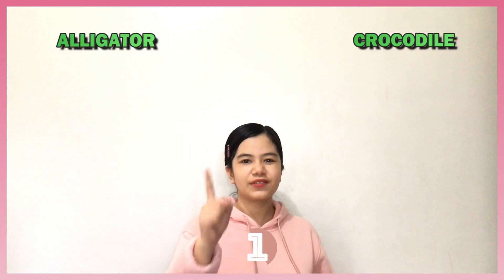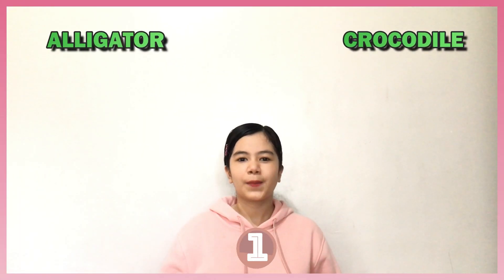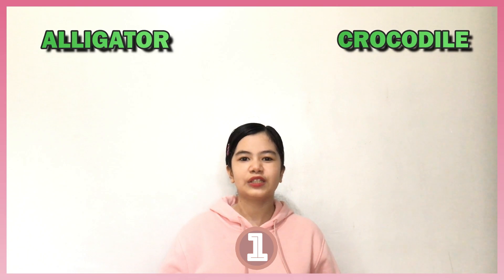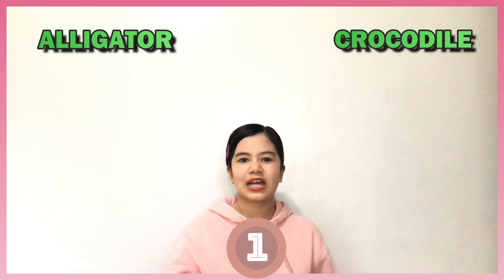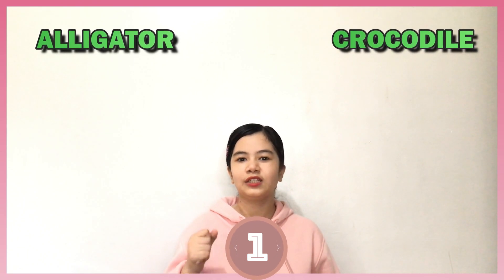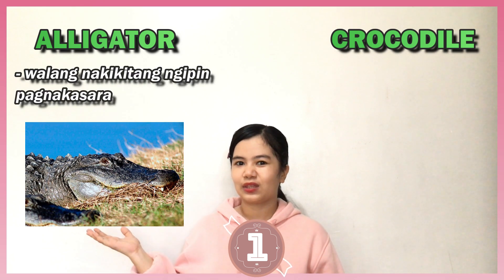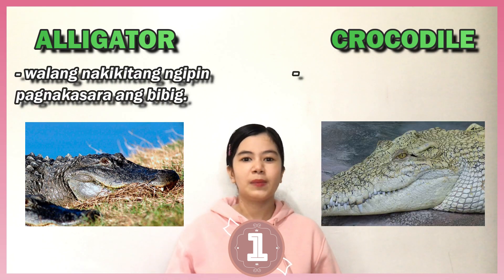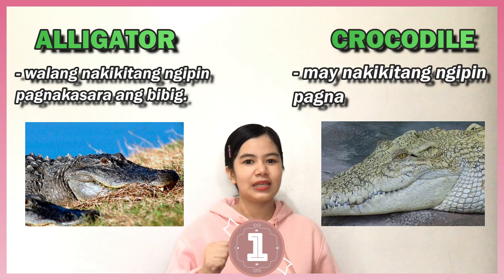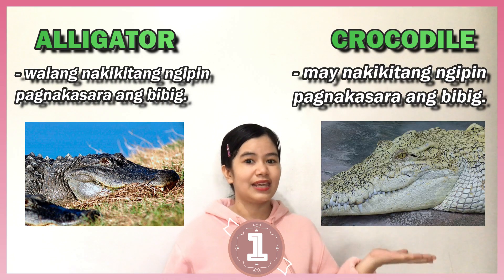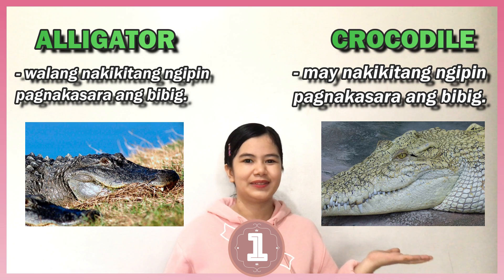First difference. Kapag nakakita kayo nito at nakasara ang bibig, tingnan ninyo kung makikita ninyo ang ngipin. Pag wala, it's an alligator. Kapag may visible na ngipin, it's a crocodile. (When you see one with its mouth closed, check if you can see teeth. If none, it's an alligator. If there are visible teeth, it's a crocodile.)